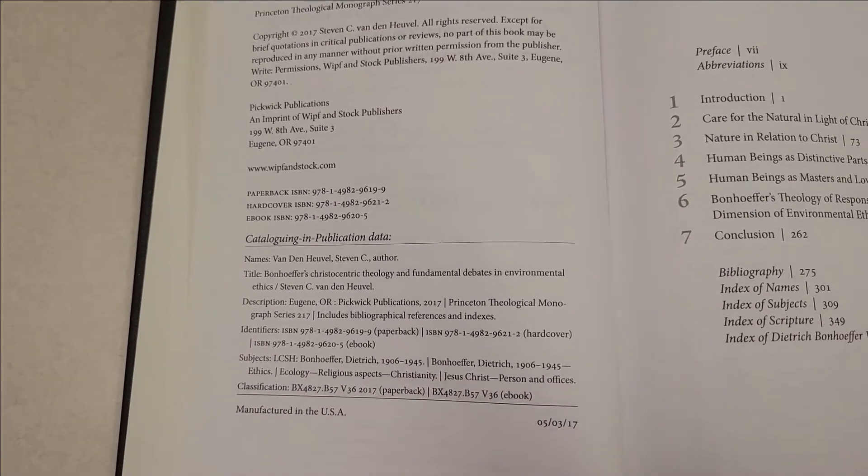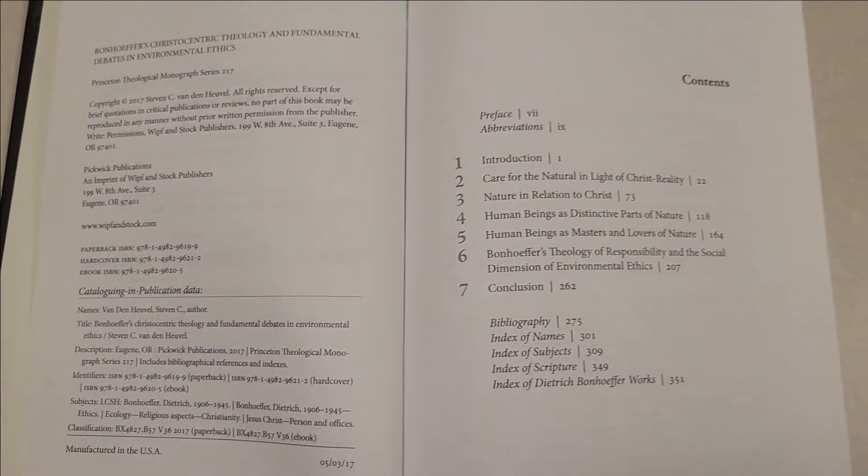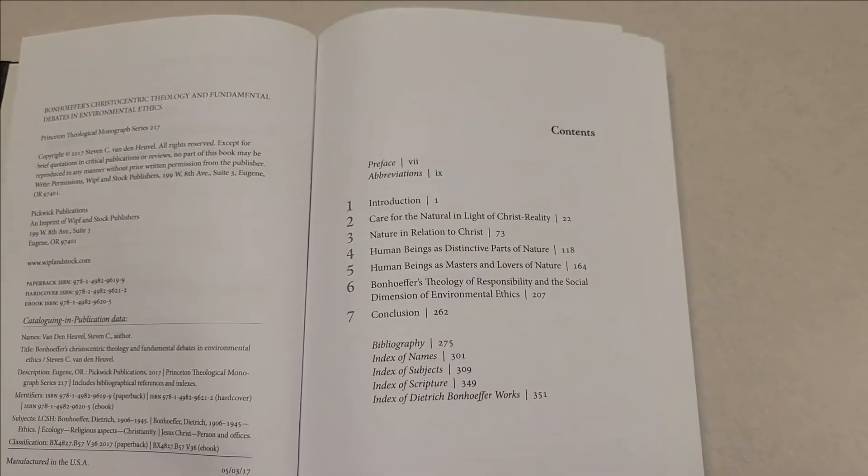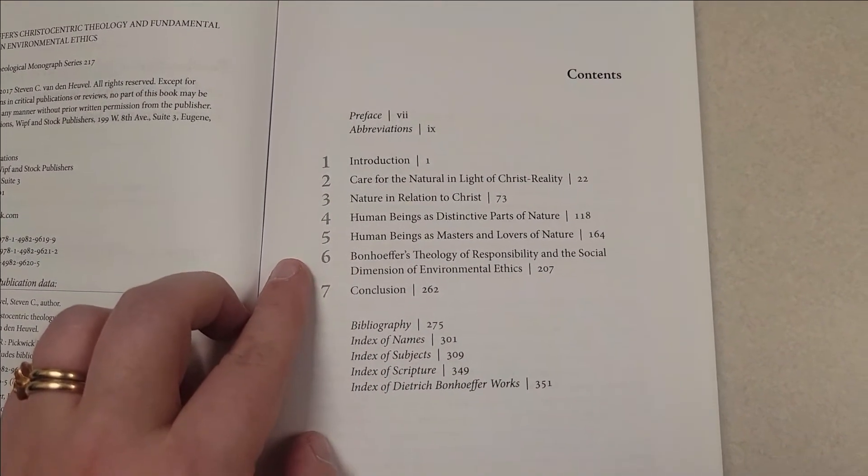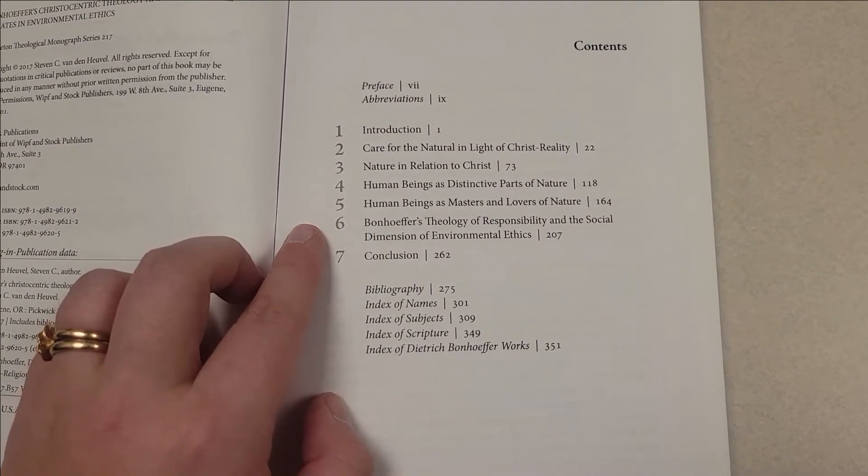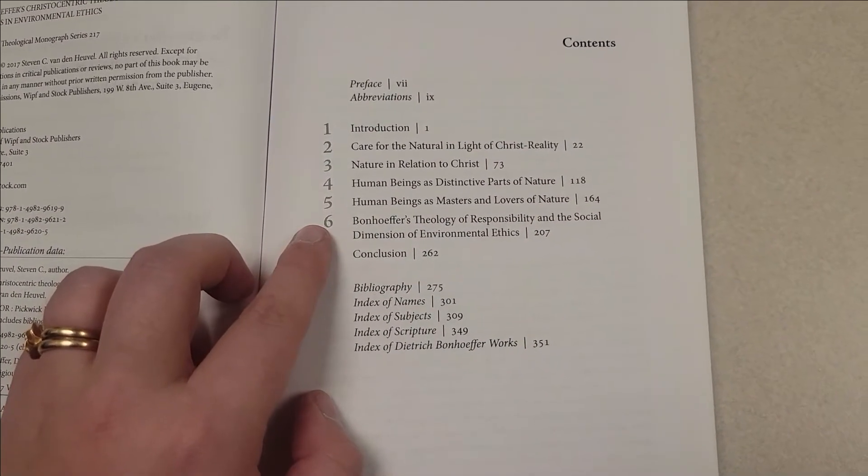Second, most scholarly books also have a table of contents at the front, where they outline their chapters and sometimes also their figures or pictures or data. This can give you a clue about the content of the book overall and help you find the most relevant information for you at a glance.